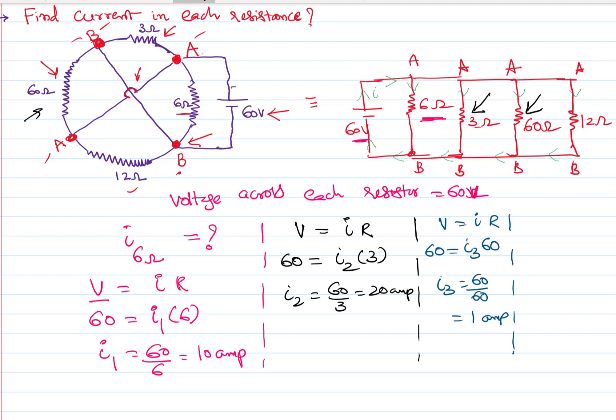Similarly, if I take up that last one, again V equals IR. V is 60, I is I4, R is 12. We have to find out the current across this, so I4 is 60 by 12, that is equal to 5 ampere.